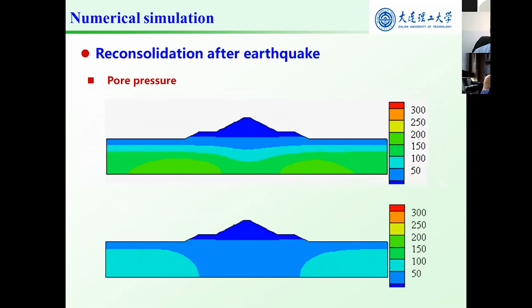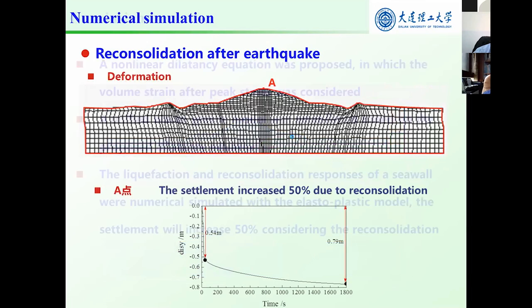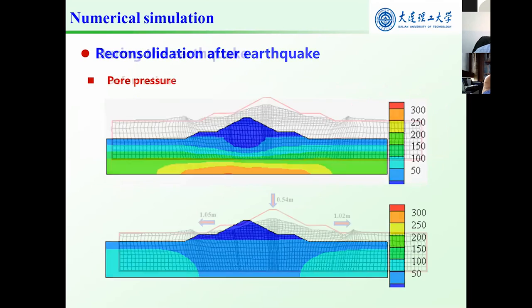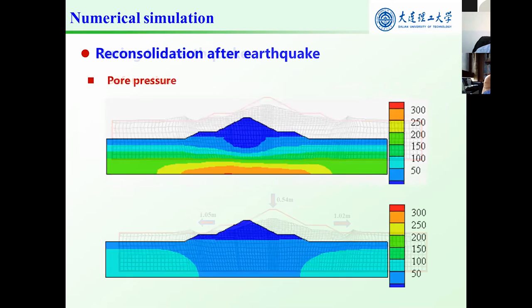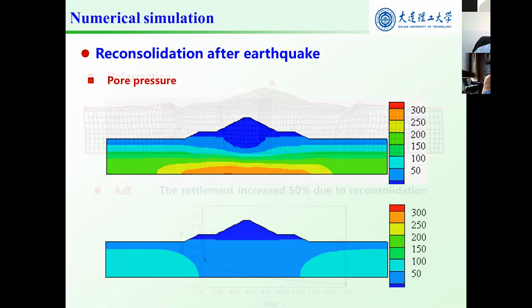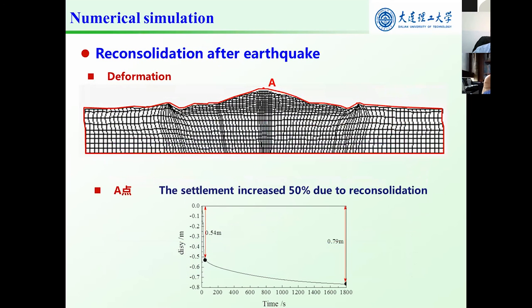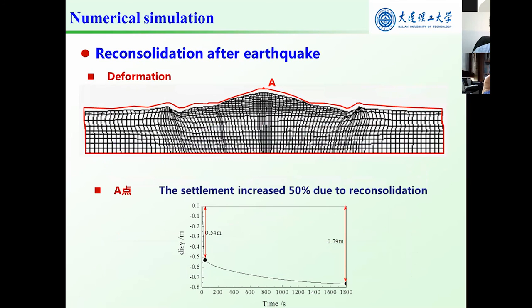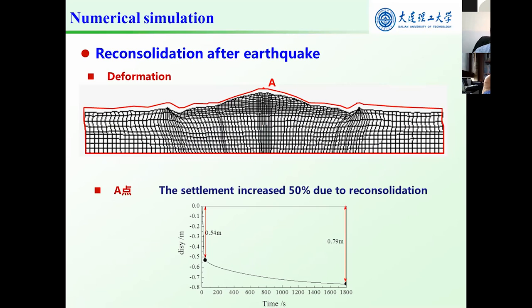Generally, dynamic analysis for liquefaction only considers the process during the earthquake. However, reconsolidation is also important. We conducted the analysis with description of the excess pore pressure. The lateral displacement and settlement increased. The final settlement is 0.8 meters, reaching about 50 percent higher than that due to seismic motion. This indicates the reconsolidation process should be considered for liquefaction analysis.